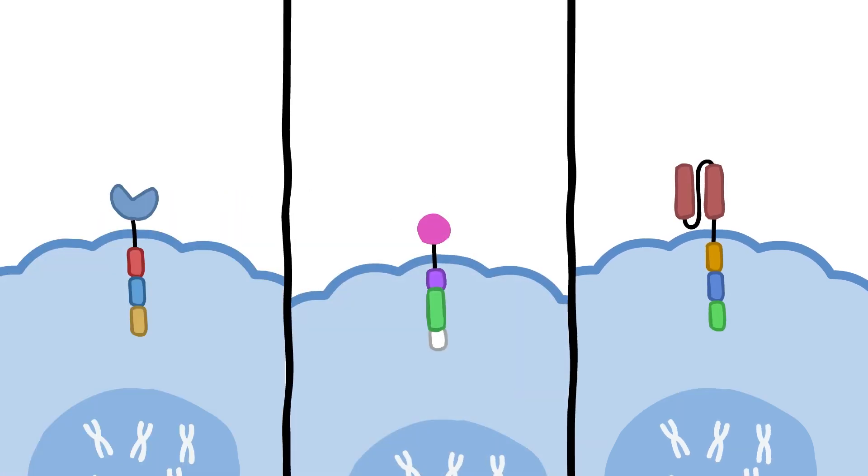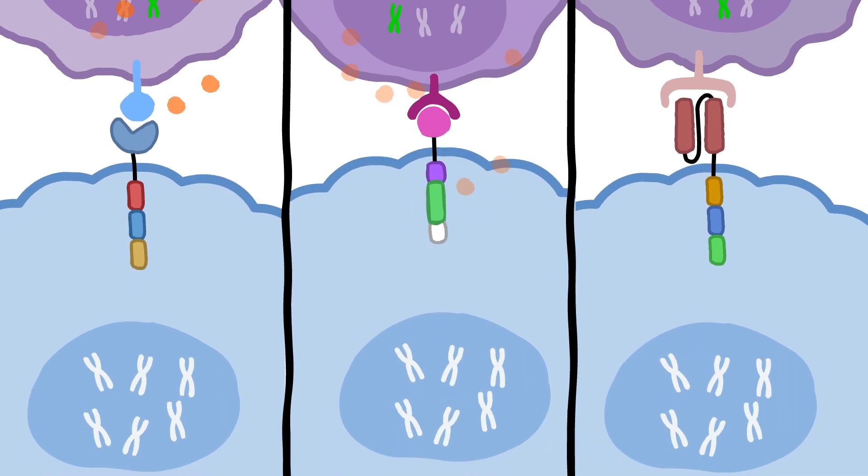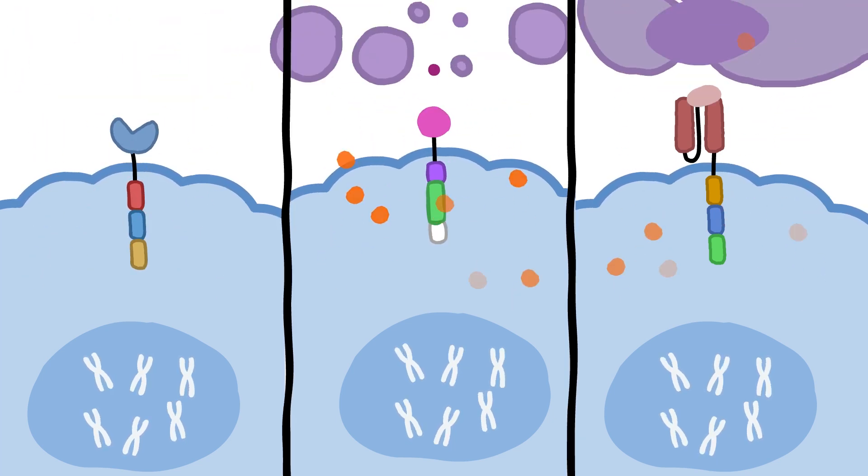This lets them design a receptor to fit any protein, so the T-cells can locate and bind to a target protein found on the surface of a specific kind of cancer cell. Binding triggers an immune response that destroys the cancer cells.